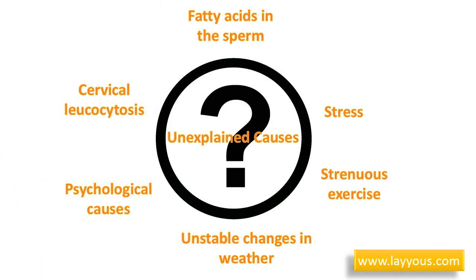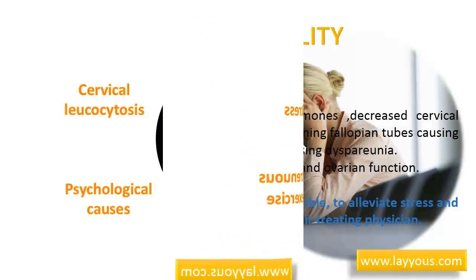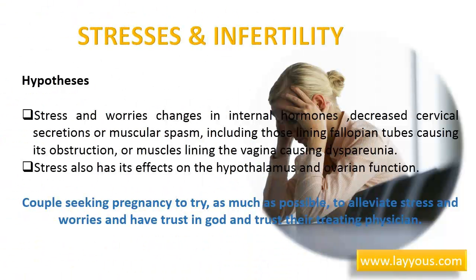Unexplained infertility is the inability to conceive after two years of marriage despite having regular intercourse. Multiple researchers have proposed various theories attempting to explain it, including the presence of certain amounts of fatty acids in the sperm, cervical leucocytosis, psychological causes, and the suggestion that stress, strenuous exercise, and unstable changes in weather may cause oligospermia, though there is a lack of strong evidence for this.